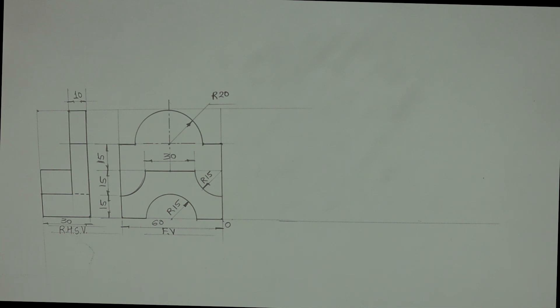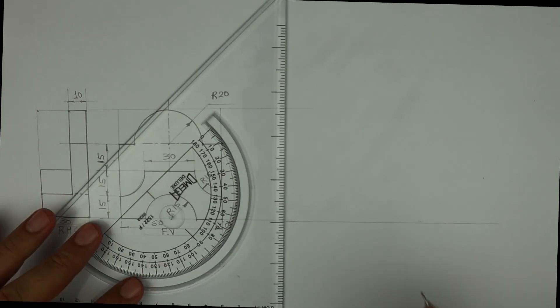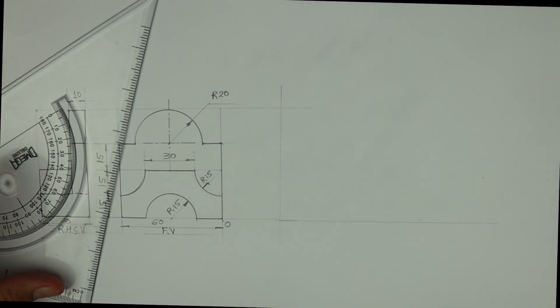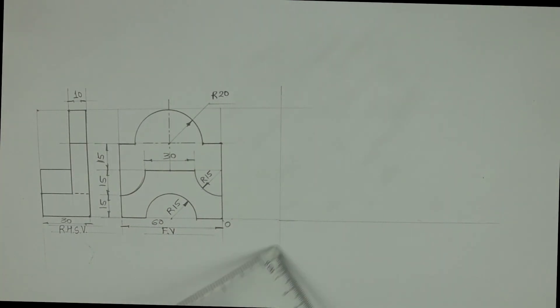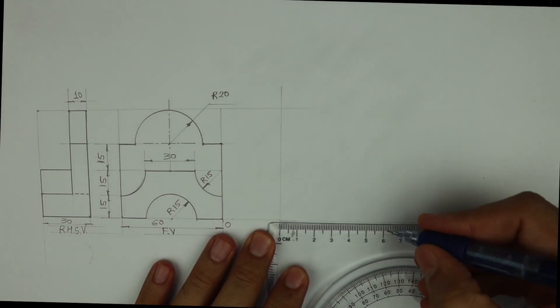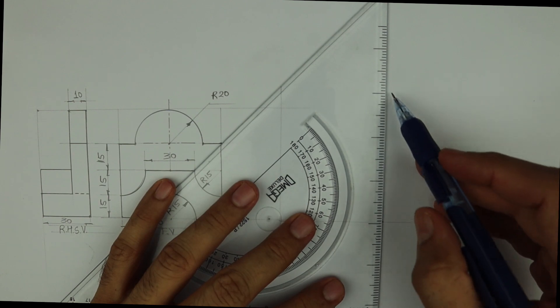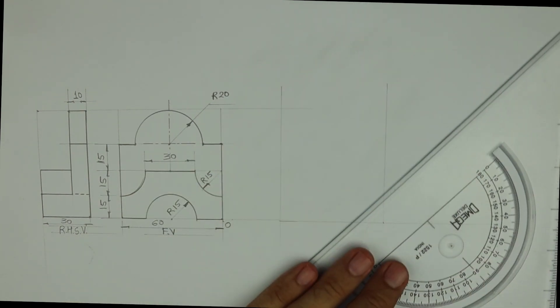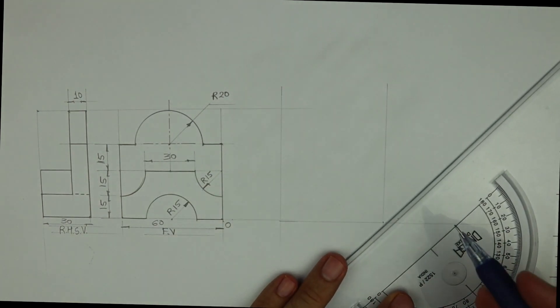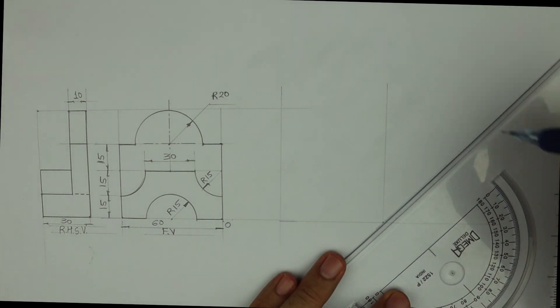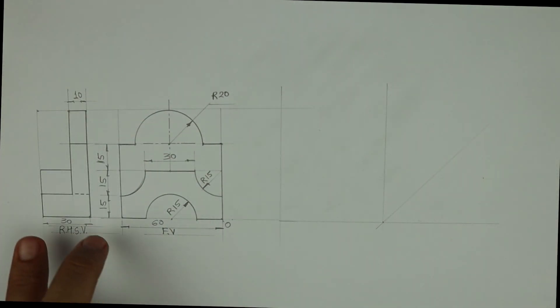So first we will draw a box. See the length is 60. So I will take 60 and height is 15 plus 15 plus 15 plus 20, that is 65, and width will go on right side.